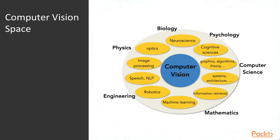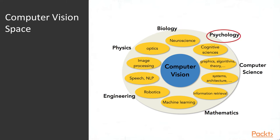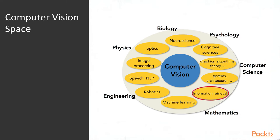You can see that computer vision sits in the middle of so many domains of application: speech recognition, image processing, biology, psychology, computer science, mathematics, information retrieval, machine learning, and robotics. In robotics, for example, it's very useful for robots to get a sense of their environment.